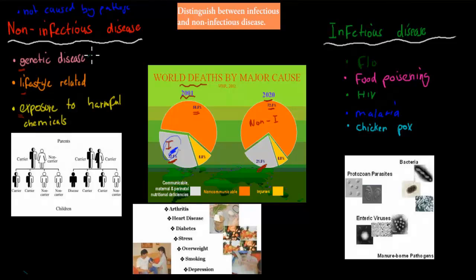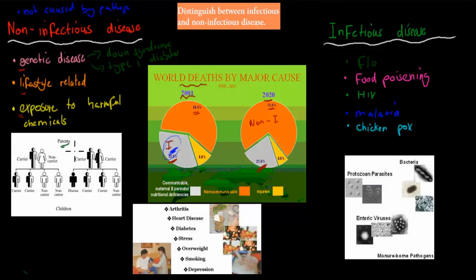Genetic means that you actually get the disease from your parents. A couple of examples would be Down syndrome and type 1 diabetes, which has a major genetic component. If both parents are carriers of the disease, the chance of offspring having the disease is quite high. So genetic diseases are an example of non-infectious disease, because whilst it's transmitted from one person to the next, it's not caused by a pathogen — it's caused by sperm and eggs.